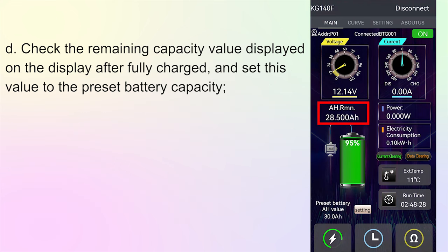Step D: Check the remaining capacity value displayed on the display after fully charged, and set this value to the preset battery capacity.